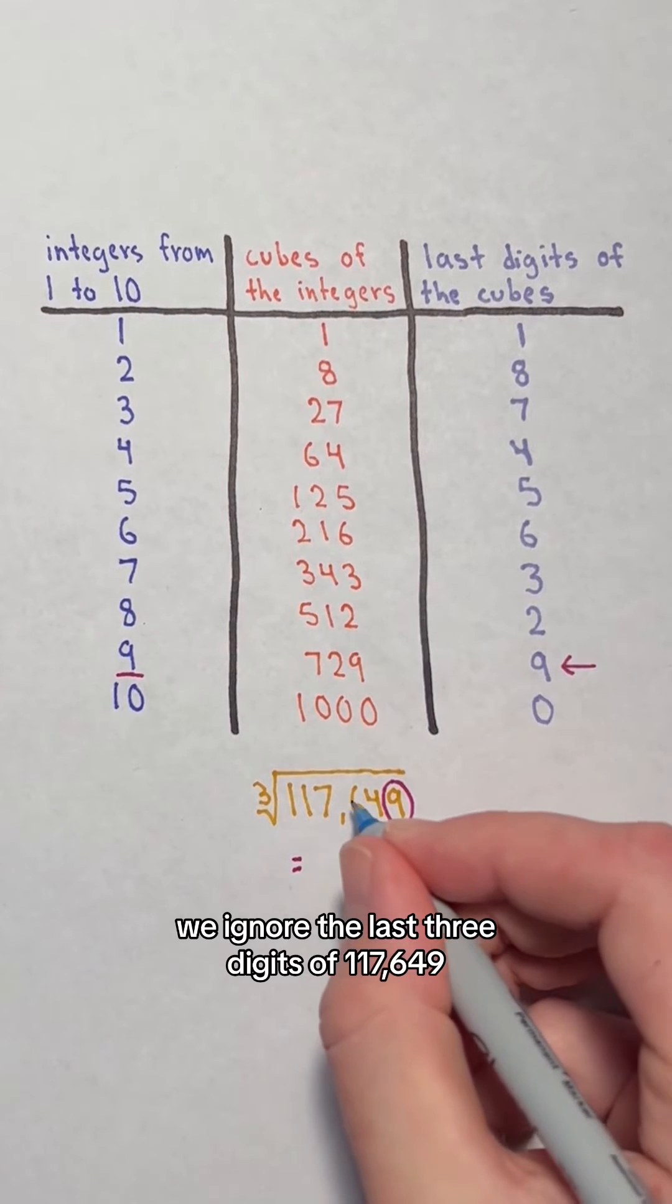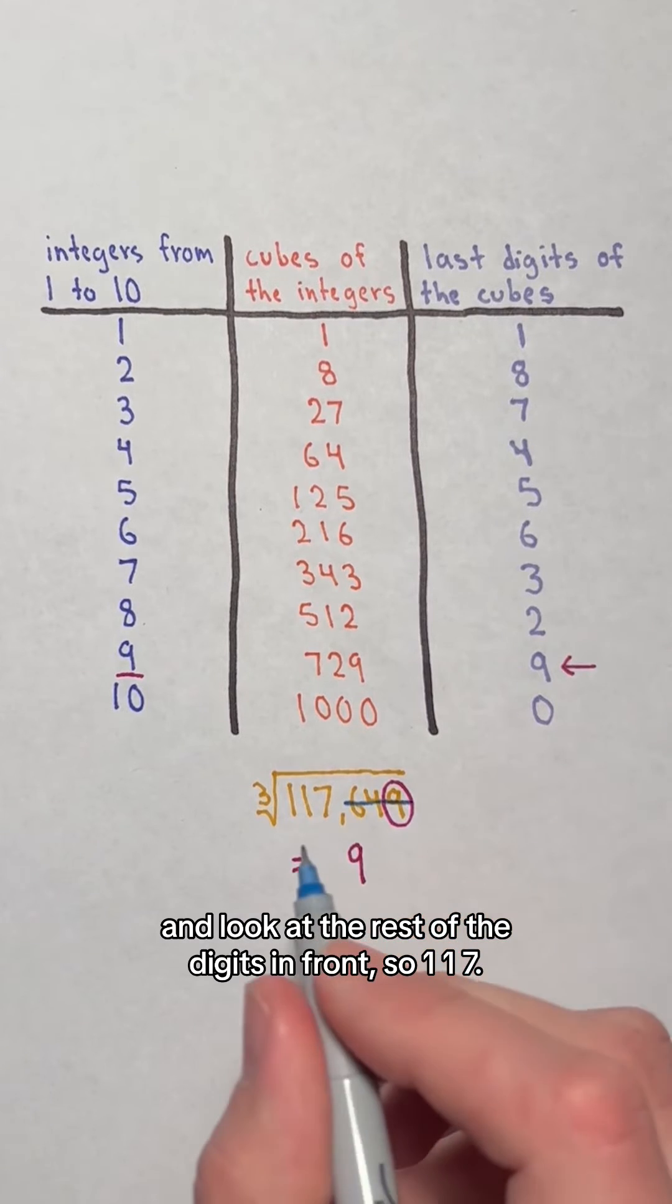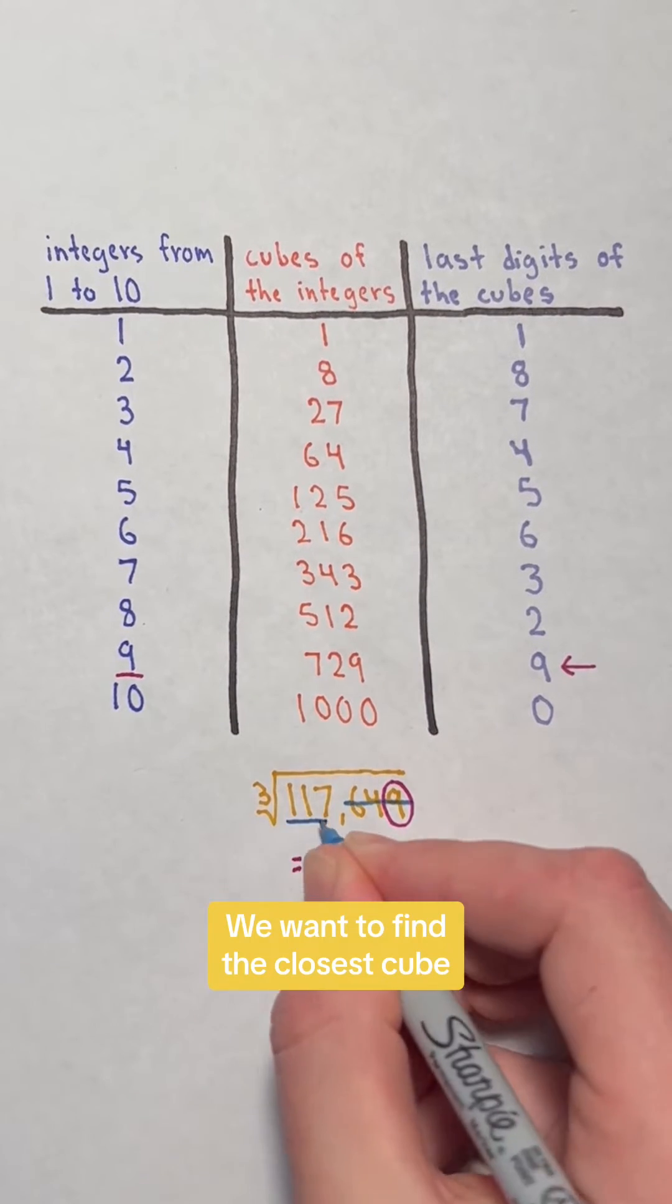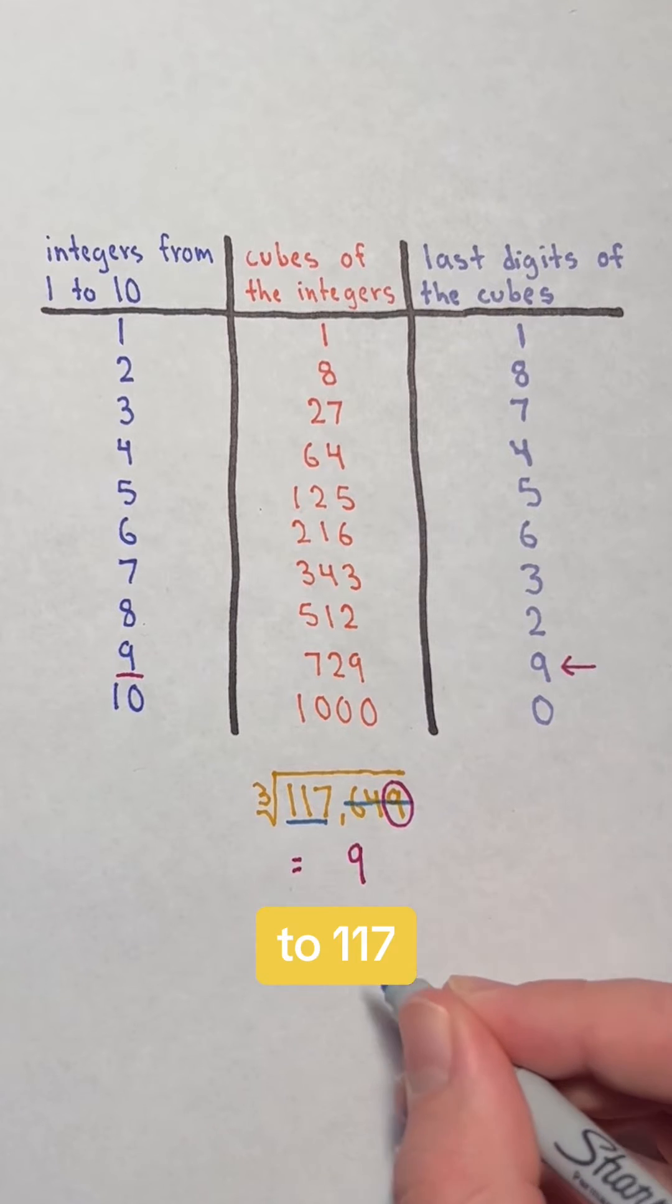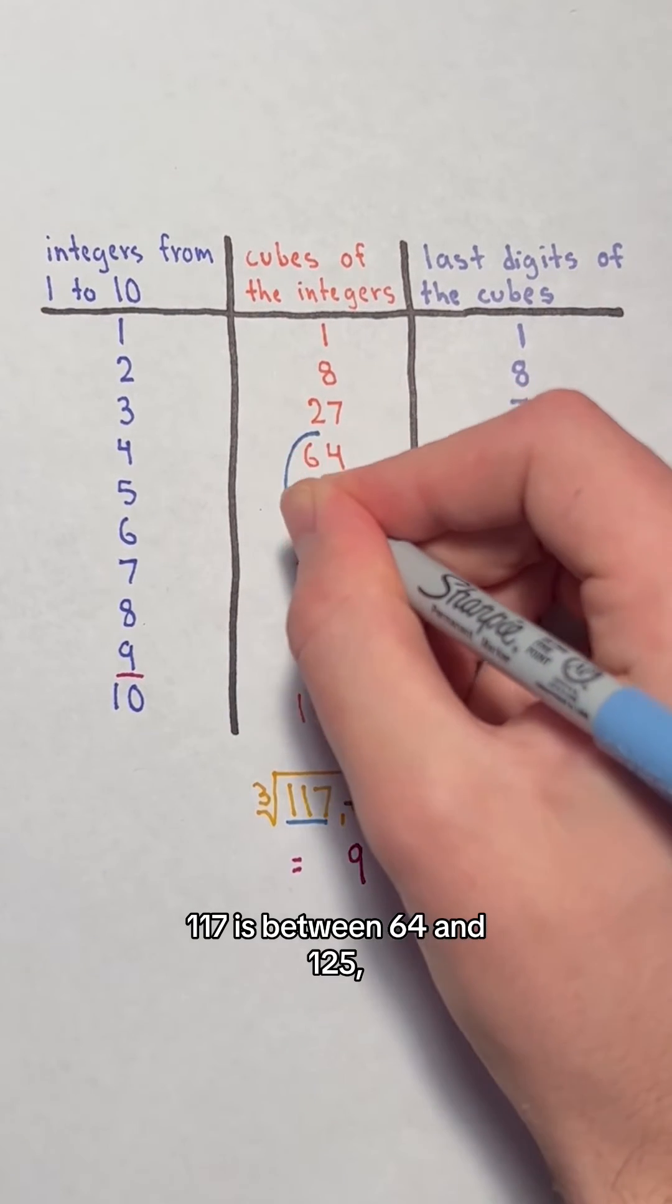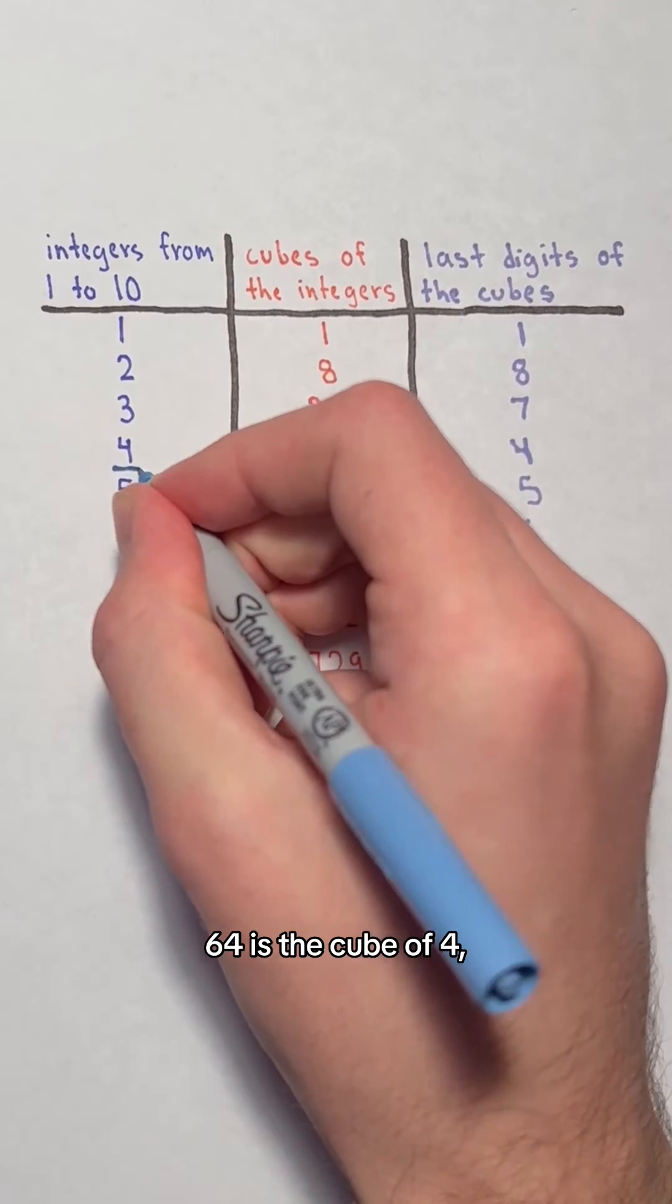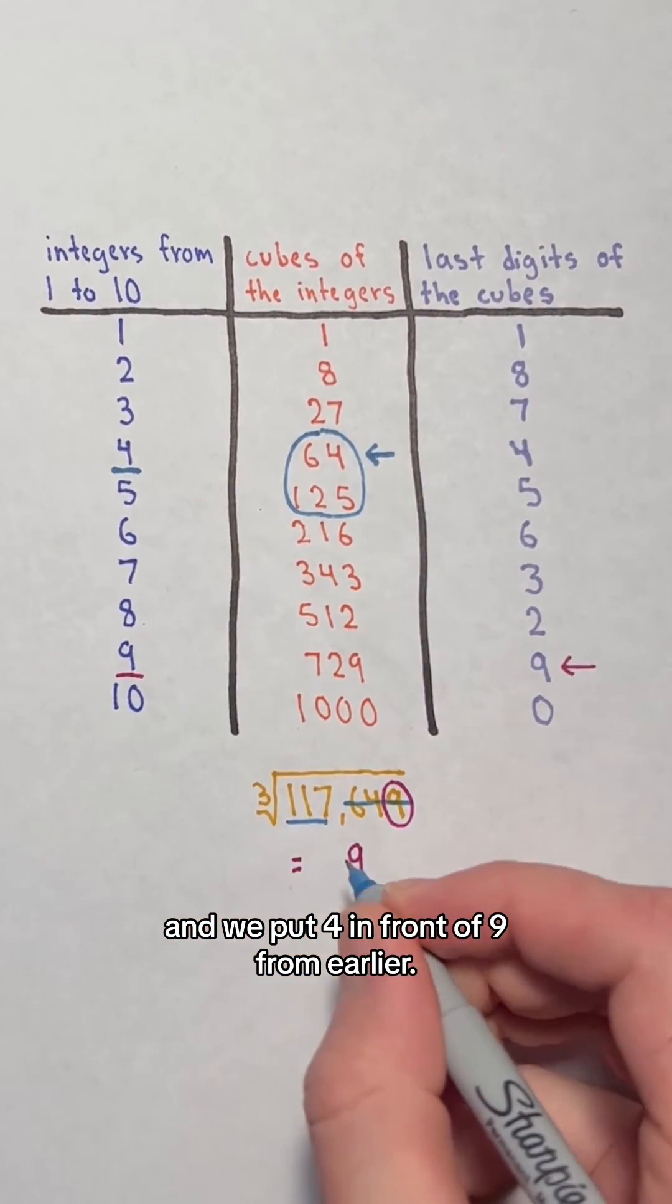Next, ignore the last three digits of 117,649 and look at the rest of the digits in front, so 117. Find the closest cube to 117 without going over. 117 is between 64 and 125, so it's closest to 64 without going over. 64 is the cube of 4, and we put 4 in front of 9 from earlier.